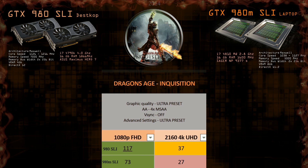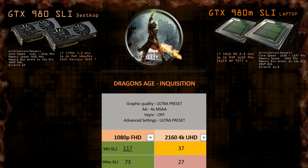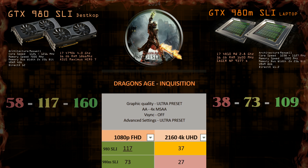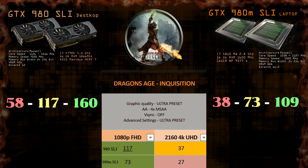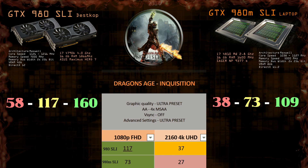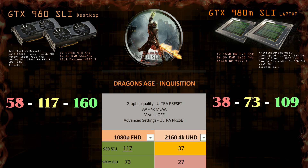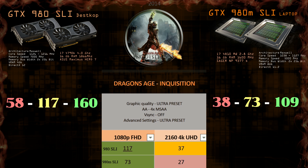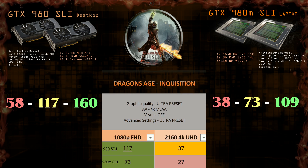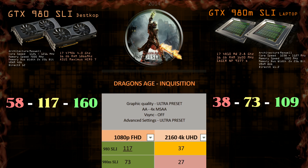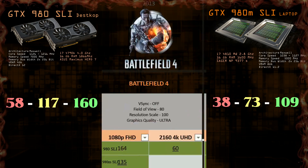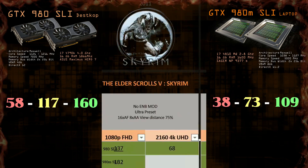Let's look at Dragon Age: Inquisition. I have Full HD and 4K numbers for you. 117 compared to 73 is a big jump — nearly 40 frames on average. The game is pretty hardcore with its requirements, and we can see that also on 4K: the 980M SLI is not managing to reach higher than 30 FPS. Lowering settings from Ultra is the only way.